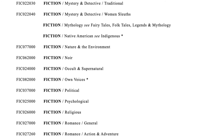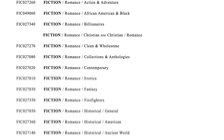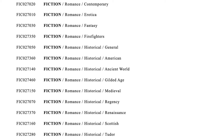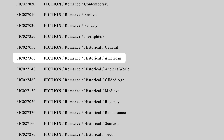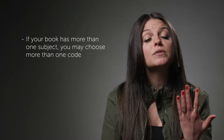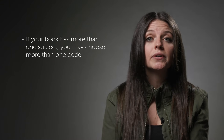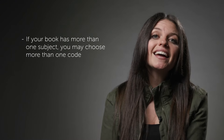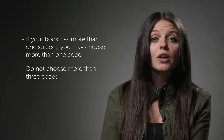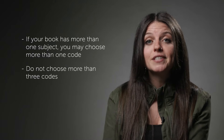For example, if you wrote a World War II romance novel, your category might be Fiction, Romance, Historical, American. If your book has more than one subject matter, you may want to choose more than one code. BISG recommends choosing no more than three codes per title.